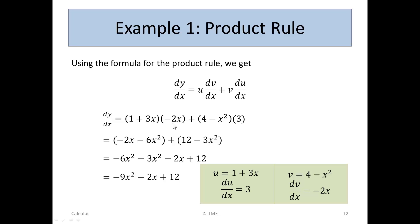Multiplying in: −2x times 1 gives −2x, and −2x times 3x gives −6x². Then 3 times 4 is 12, and 3 times −x² is −3x². Collecting like terms: −6x² and −3x² combine to give −9x², leaving dy/dx = −9x² − 2x + 12. That is the derivative of the original function, where y = (1 + 3x)(4 − x²).